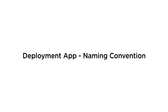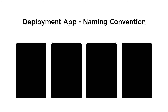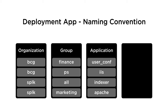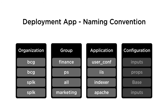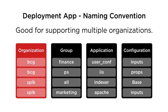We suggest naming your deployment apps using four segmented keys: Organization, Group, Application, and Configuration. The first key is used to identify the company or organization for which the app will be used. This is especially useful when you have to support multiple organizations in your deployment.